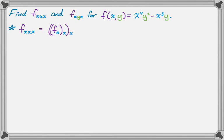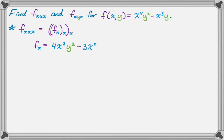This is nice because it's a polynomial type deal, so I just need the power rule a lot. So partial x: the derivative of x to the fourth is 4x cubed, and y squared is just a constant, minus the derivative of x cubed which is 3x squared, and y is just a constant. So that's partial x.